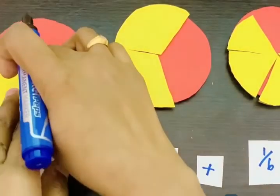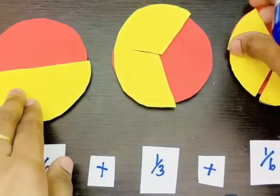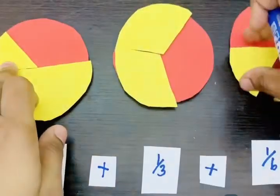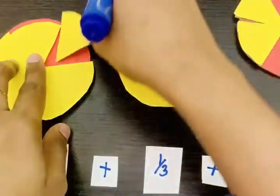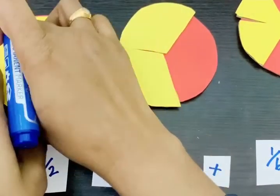For 1 by 2, the equivalent fraction is... let us check: 1, 2, 3, so 3 by 6.